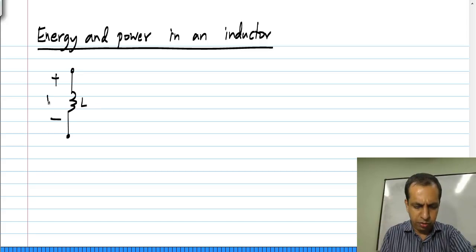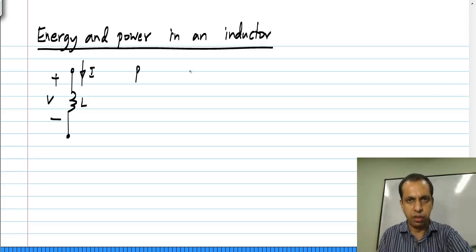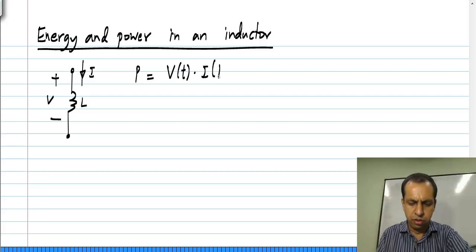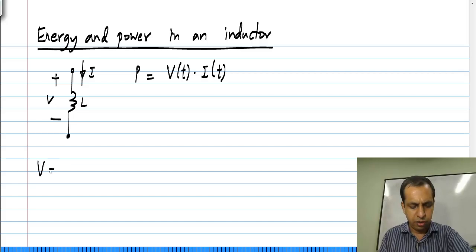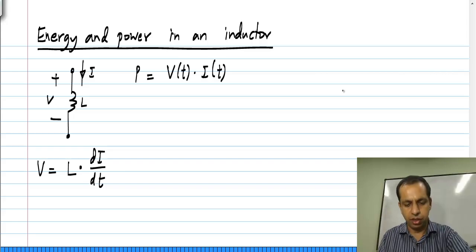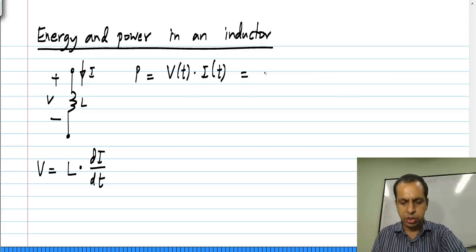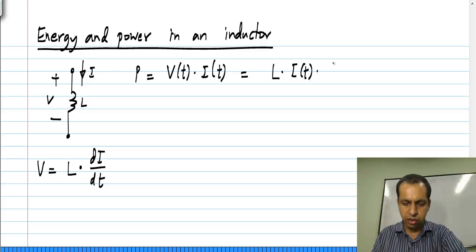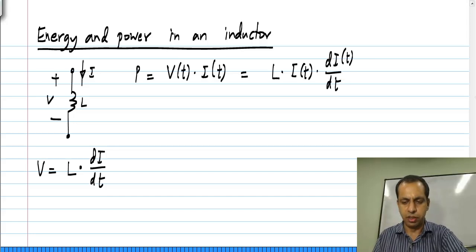We have an inductor L with a voltage V across it and a current I through it. The power, just like it is for any two-terminal element, is the product of voltage and current. In an inductor, the voltage is the inductance L times dI/dt, the time derivative of the current I. Substituting that, we get L·I(t) times the time derivative of the current.